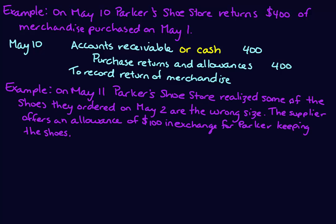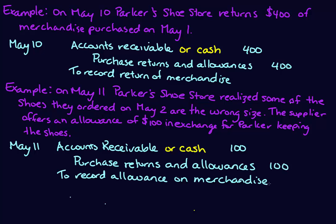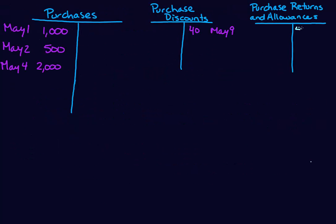In the allowance example, 'allowance' means we're not actually returning any inventory — we're keeping it, but our supplier has agreed to give us a discount because we're somewhat unhappy with it. We use the exact same account as for a return: Purchase Returns and Allowances. The journal entry, other than the numbers, looks exactly the same. In our T-accounts, the Purchase Returns and Allowances account now has a $400 credit from the return and a $100 credit on the 11th from the allowance.